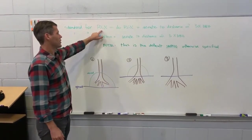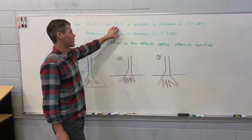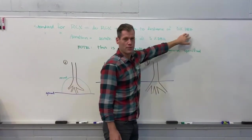The standard for root collar excavation, RCX, is to do the RCX plus air rate to a distance of three times DBH.